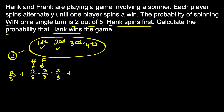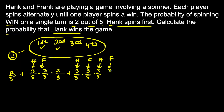We also have to consider the probability that Hank wins on the third spin. You'll notice a pattern: Hank goes first but we want him to not win on the first spin — that's a three out of five chance. We need Frank to not win on the first spin — also three out of five. Now on the second spin, three out of five chance Hank doesn't win, and three out of five chance Frank doesn't win on his second spin. So now on the third spin, there's a two out of five chance that Hank wins.